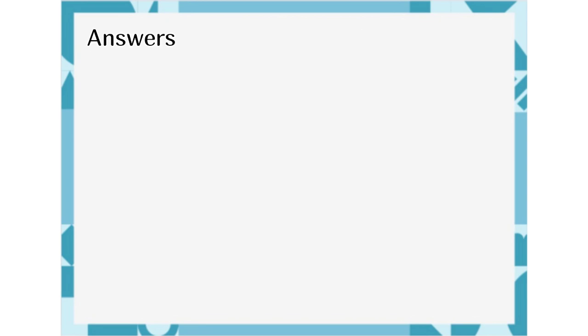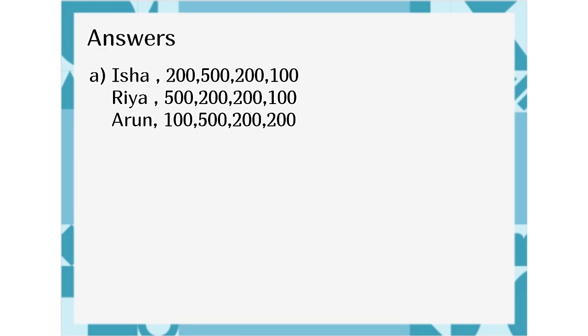Answers. A. Isha 200, 500, 200, 100. Ria 500, 200, 200, 100. Arun 100, 500, 200, 200. B. 51. C. 120.